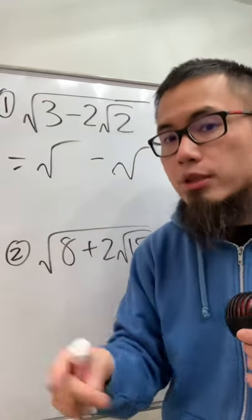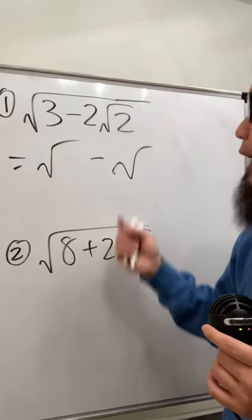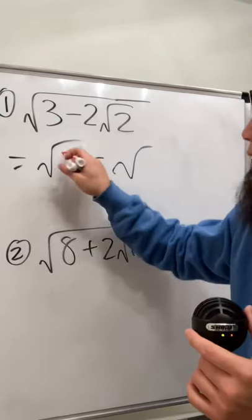And now we have to think about 2 numbers. They add up to be 3, they multiply to be 2. So the correct combination is 2 and 1, so let's go ahead and put that down right here.